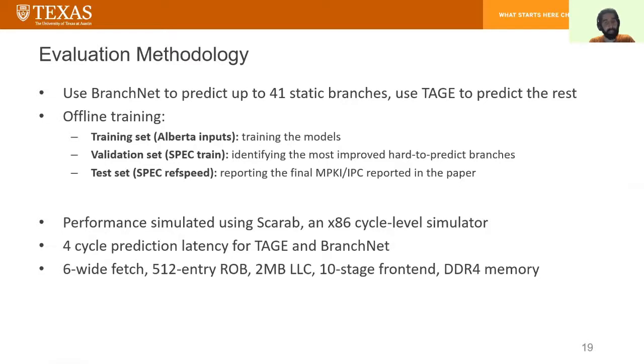To evaluate BranchNet, we use the following methodology. We use BranchNet to predict up to 41 static branches and we use TAGE to predict the rest. For doing offline training, we run each program with all the available inputs to us and divide them into three different sets: training set, validation set, and the test set.